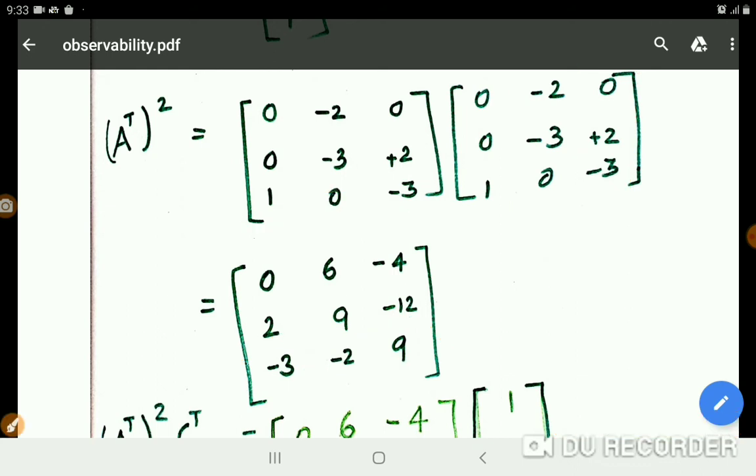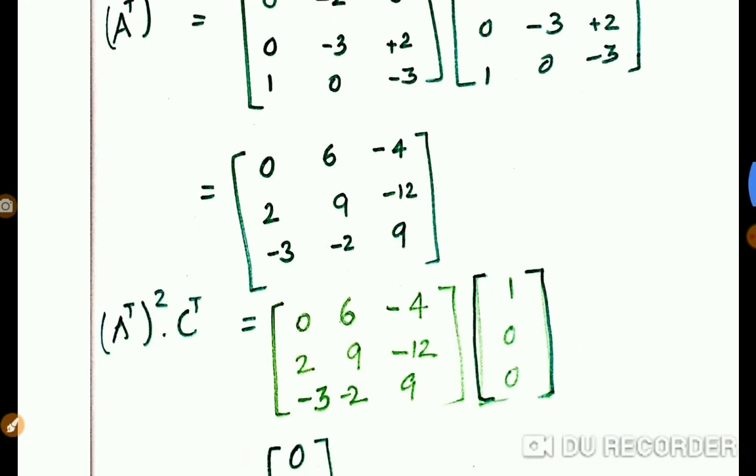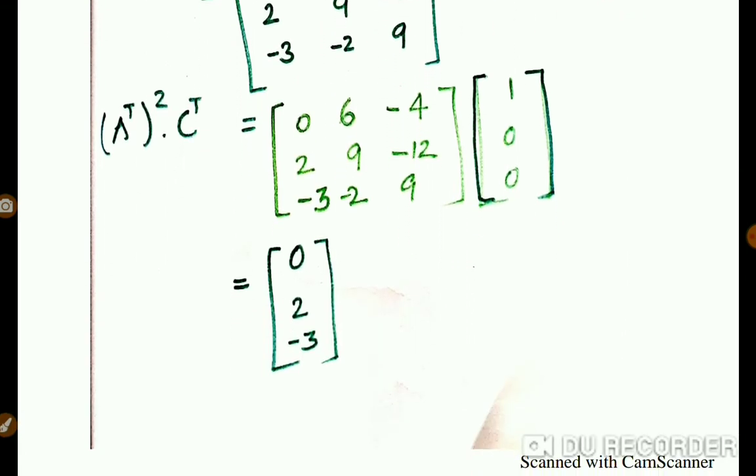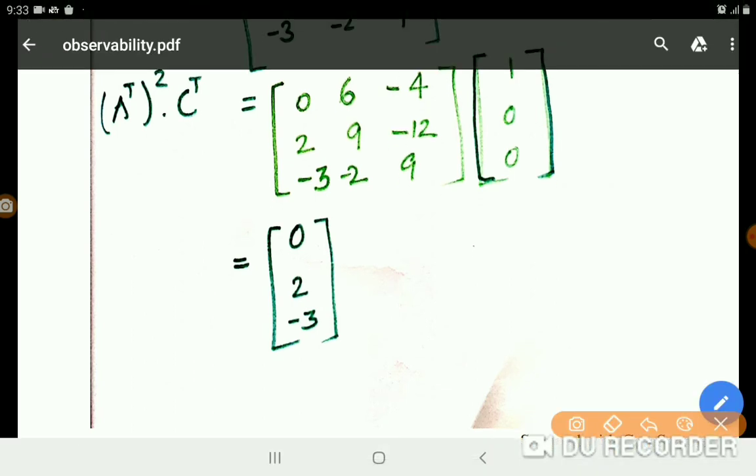Similarly we get A transpose square. Then next is A transpose square C transpose. So A transpose square into C transpose, again the same matrix multiplication. Here we have 0, then 2 times 1 is 2, then rest of the two things are 0, only 2 here. Minus 3 times 1, so minus 3, then rest of the two things were 0.